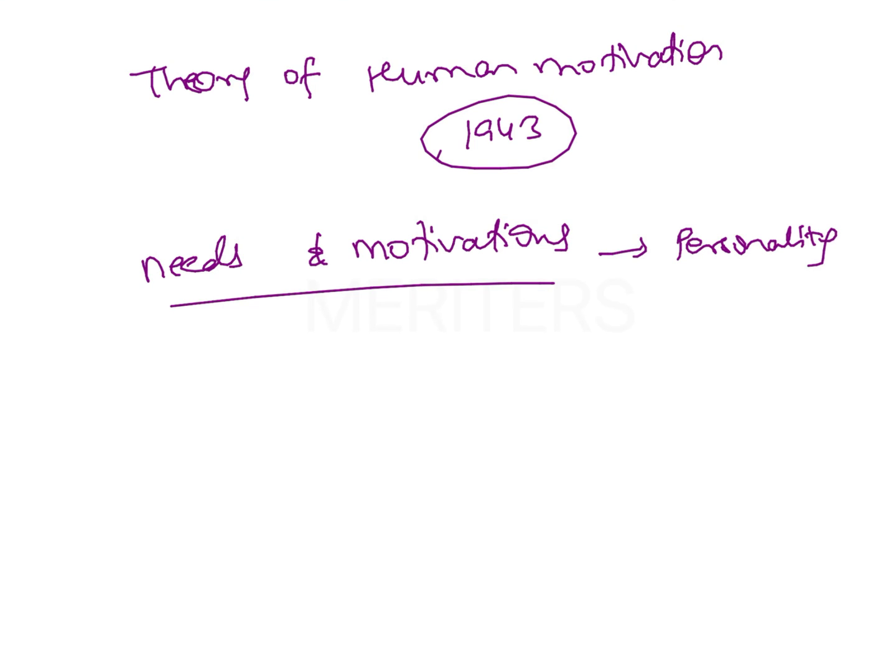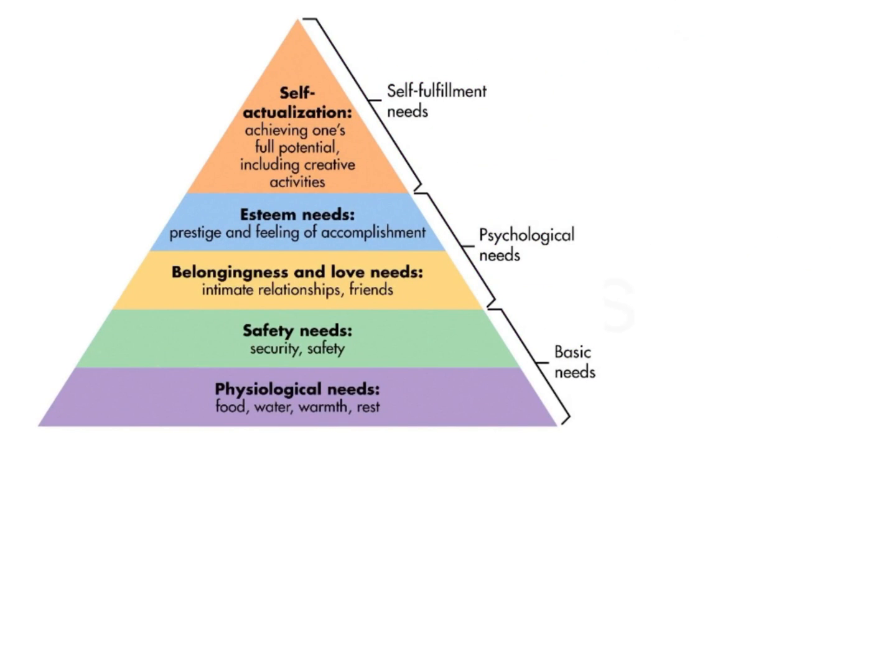All these needs or motivations are not kept at the same level — rather, there's a hierarchy. There are the most basic physiological needs that a person must have in order to thrive, and as you progress higher in the hierarchy or pyramid of needs, these needs become more and more intellectual.